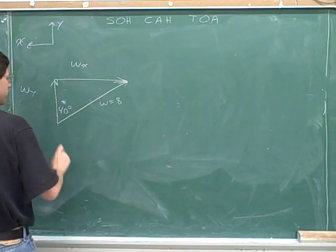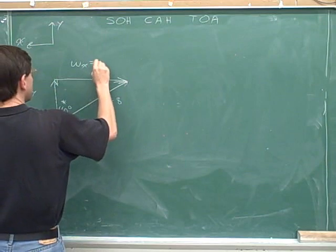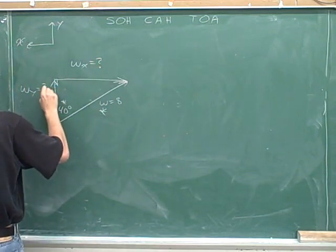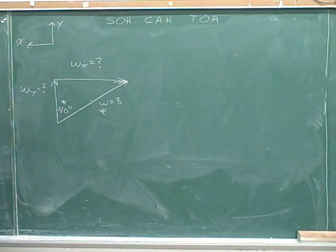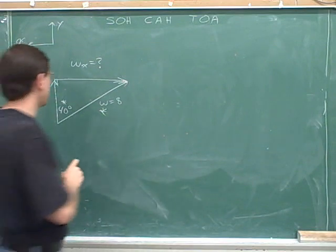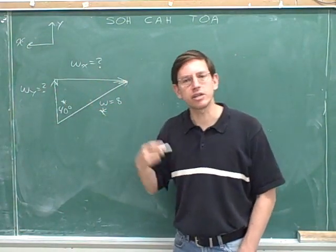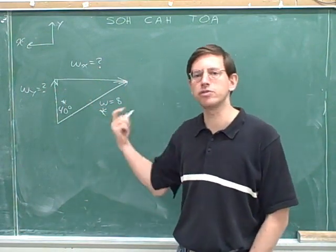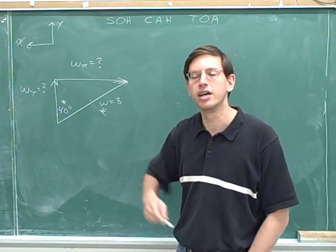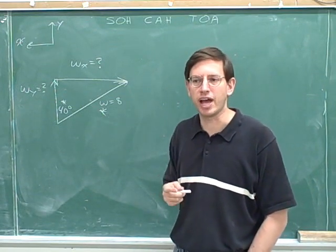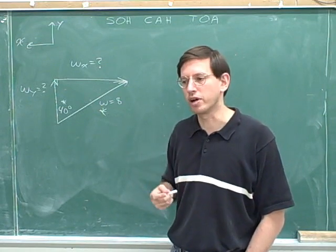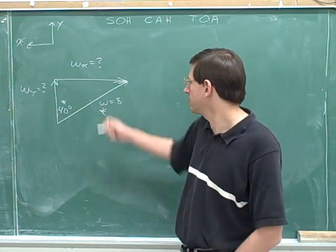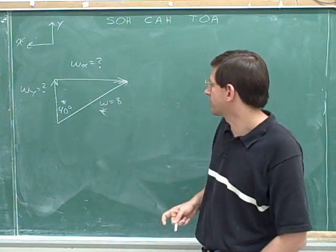Here's the angle we're focusing on. Here's the side we were given. I'm trying to figure out what these components are. We can't use the Pythagorean theorem here. You can only use the Pythagorean theorem when you're given two sides and you need a third side. The Pythagorean theorem is for when you already know two sides and you want to find the third side. But here we only know one side, so we're going to have to use trig functions.